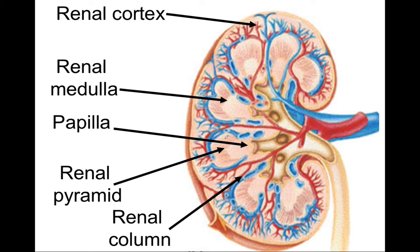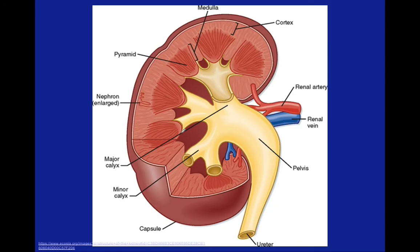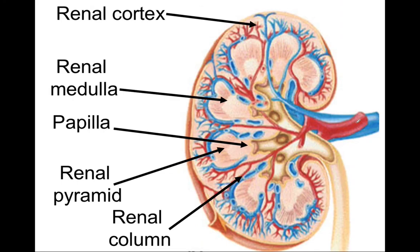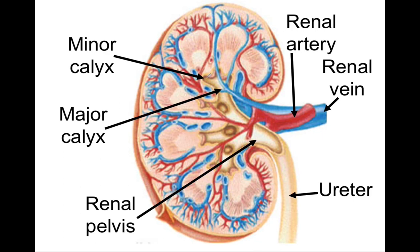In order for fluid to pass from the renal pyramids into the minor calyces, they must come out of the renal papilla — referring to the areas at the points of the renal pyramids. Once blood is taken from the renal artery out to the renal cortex, it will be filtered in the functional unit known as the nephron. The nephron is a little tube that collects waste products from the blood and directs them through the renal papillae into the minor calyces. The minor calyces flow into the major calyces, the major calyces flow into the renal pelvis, and the renal pelvis leads into the ureter, which takes urine down to the urinary bladder to be stored until it's released by the urethra.